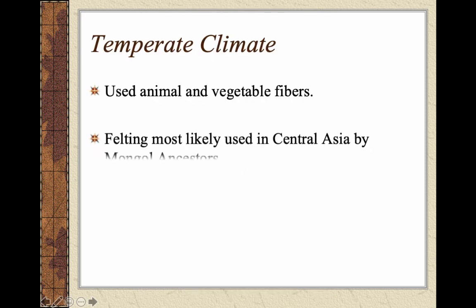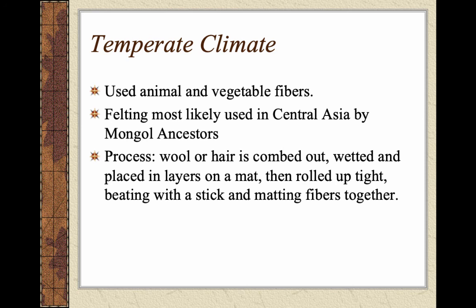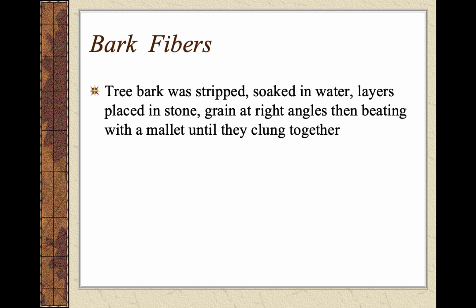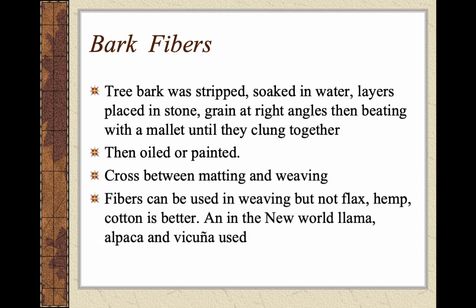Regarding climate that wasn't too hot or too cold, they used animal and vegetable fibers for clothing. Felting was most likely used in Central Asia by Mongol ancestors — wool and hair combed out, wetted, placed in layers on a mat, rolled up tightly, and beaten and agitated with a stick, which interlocks the fibers together to create a cloth, something like felt. Tree bark was also stripped, soaked in water, layers placed on rocks and crisscrossed at right angles, then beaten with a mallet until they clumped together — almost a felting process — then oiled or painted. It's a cross between weaving and matting.